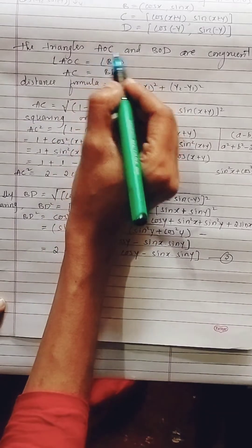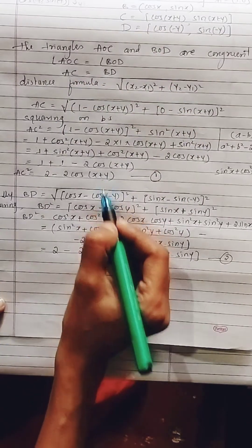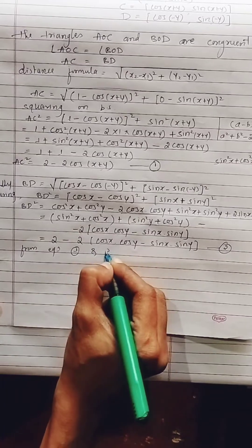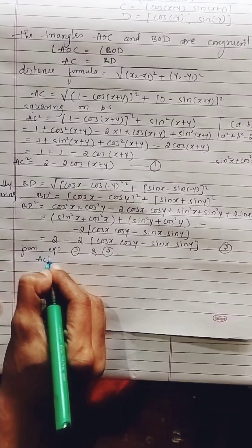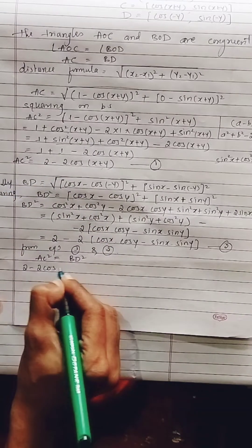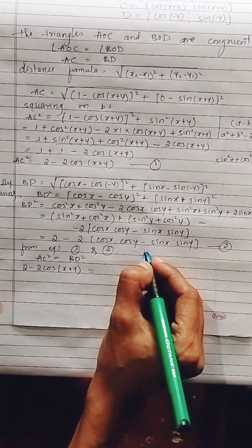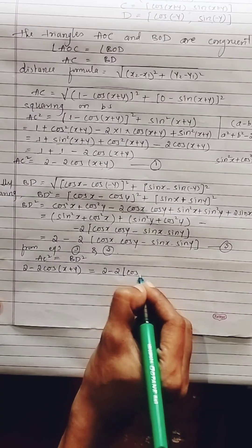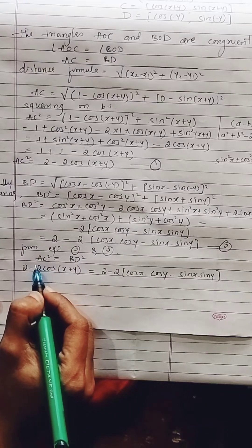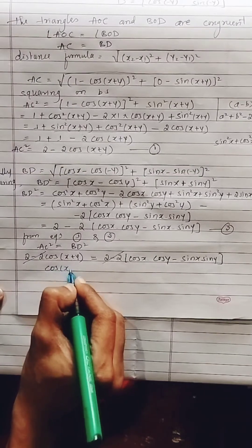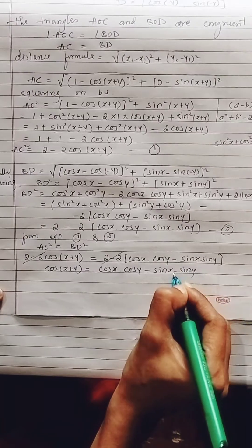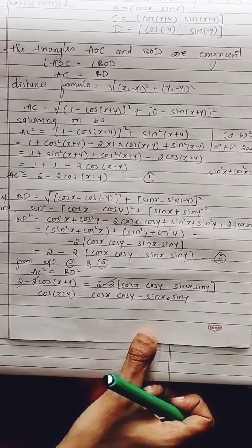Since triangles AOC and BOD are congruent, AC = BD, so AC² = BD². Substituting from equations 1 and 2: 2 − 2cos(x+y) = 2 − 2(cos x·cos y − sin x·sin y). The 2 and −2 cancel on both sides, giving cos(x+y) = cos x·cos y − sin x·sin y. Hence this is proved.